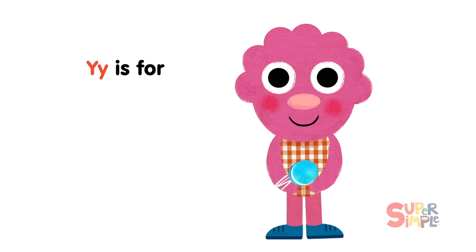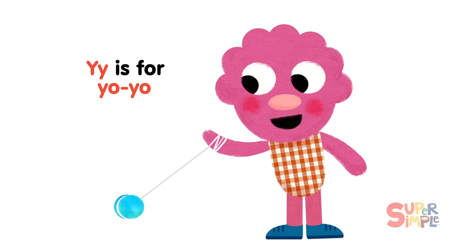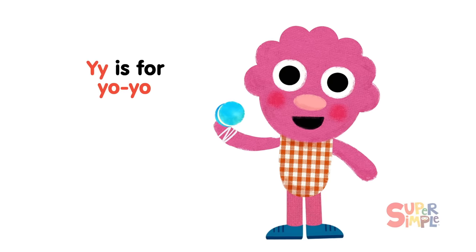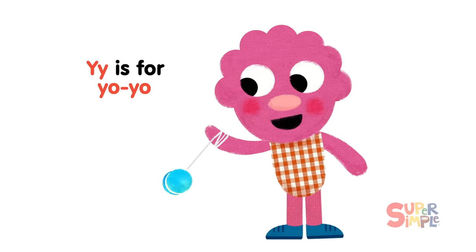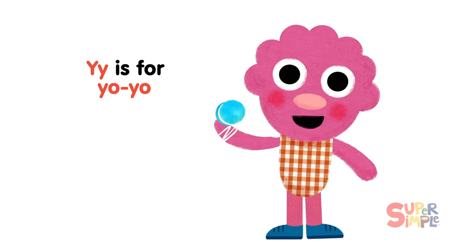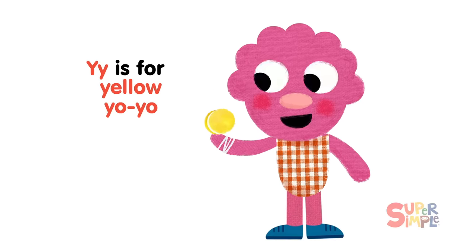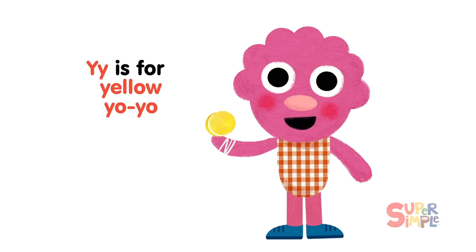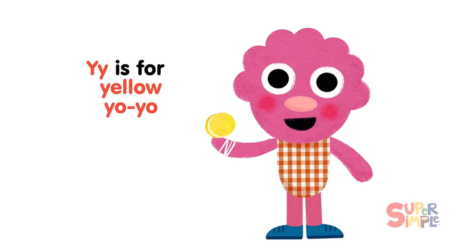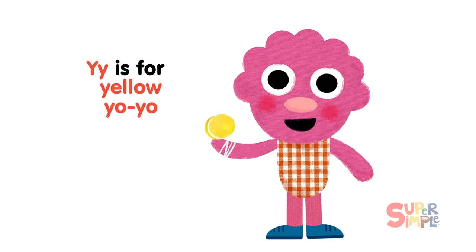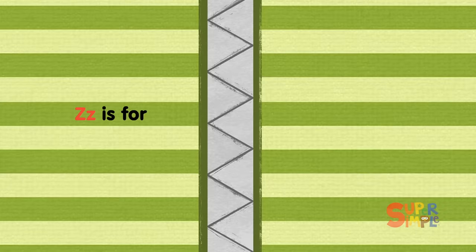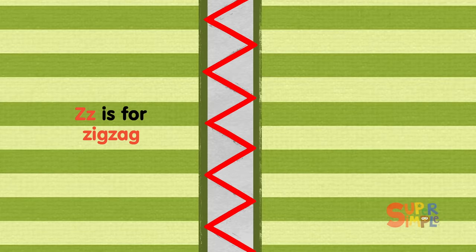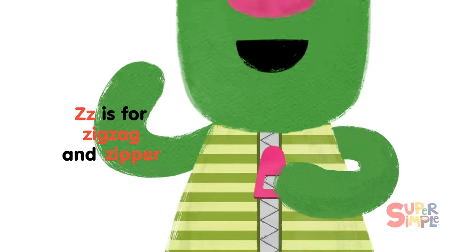Y is for Yoyo, Yellow Yoyo. Z is for Zigzag and Zipper.